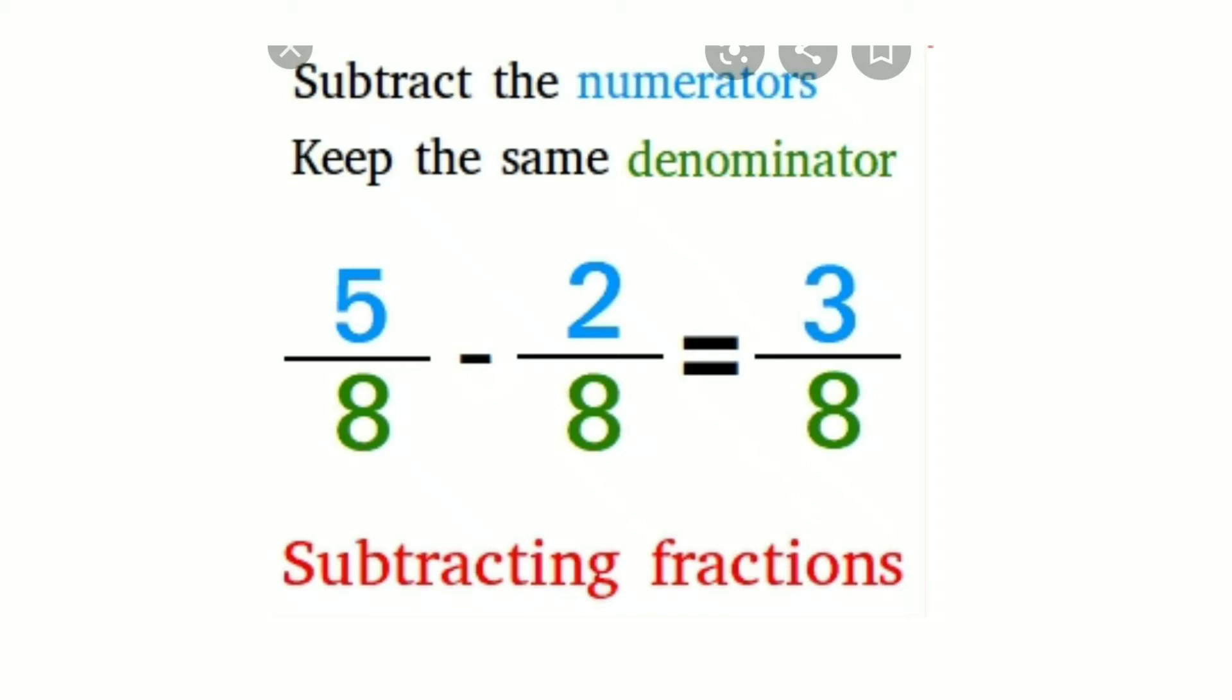Look at here. 5 by 8 minus 2 by 8. Step 1: Subtract the numerator, 5 minus 2 is 3. Step 2: Keep the same denominator, that is 8. So our answer is 3 by 8.